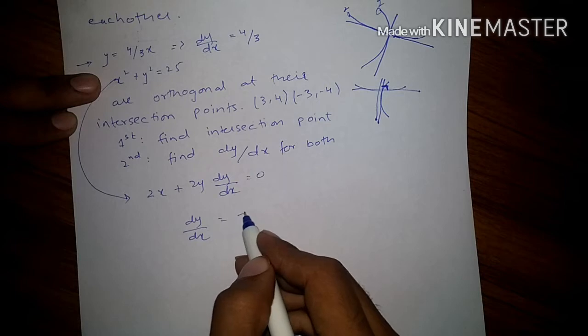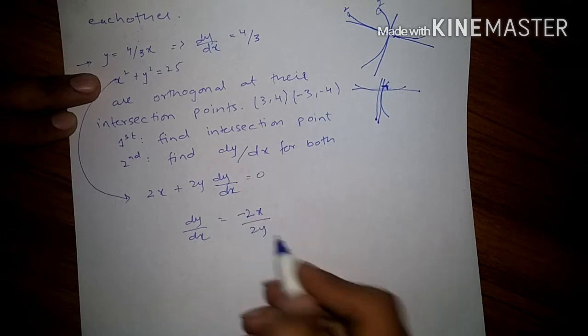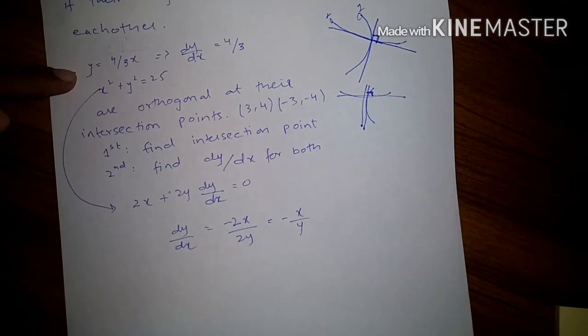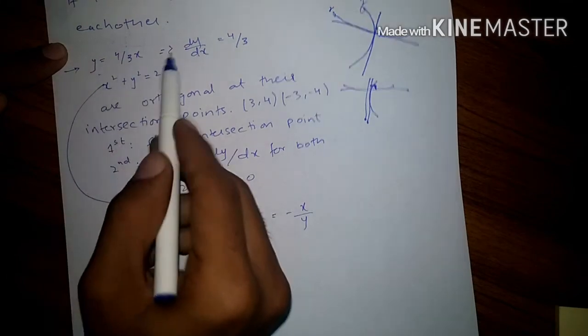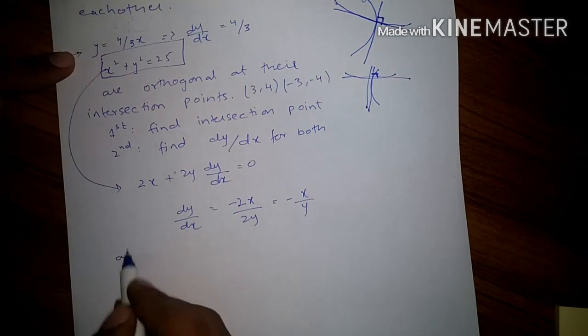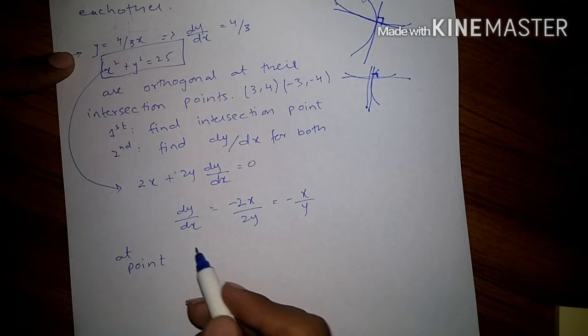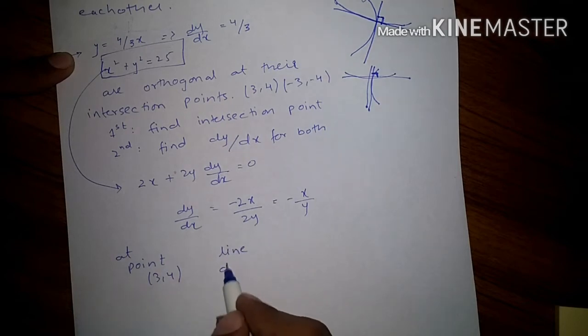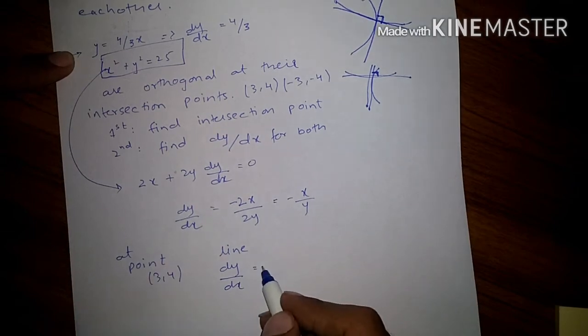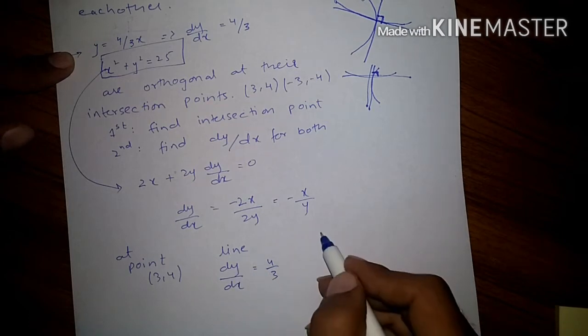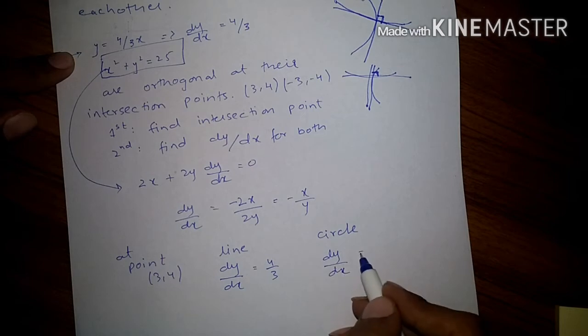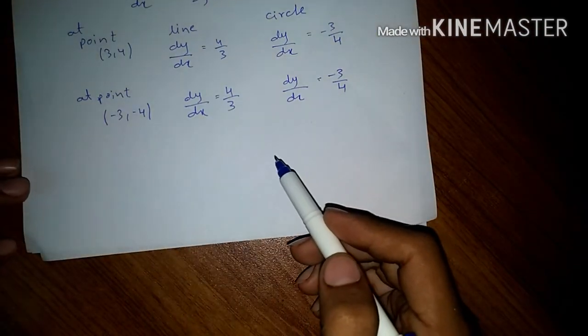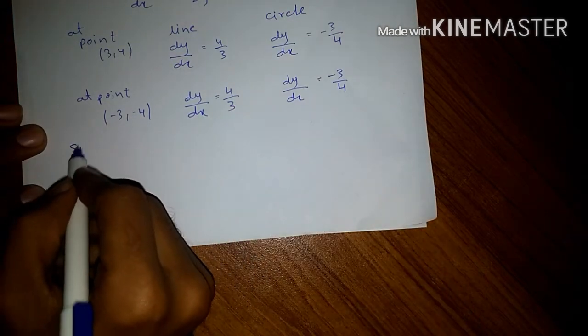This is basically equation of circle. At point (3,4), for the equation of line, dy/dx yields to be 4 over 3, and for the equation of circle, dy/dx is minus 3 over 4.